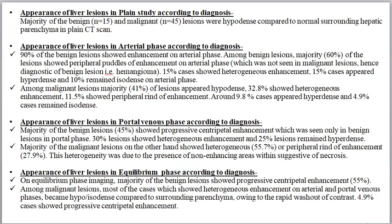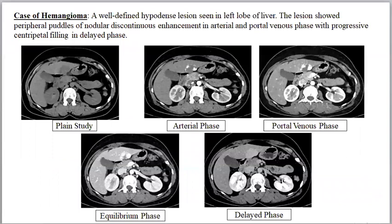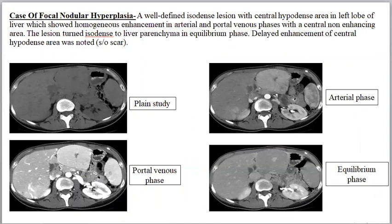On equilibrium phase imaging, the majority of benign lesions showed progressive centripetal enhancement. Among malignant lesions, most cases that showed heterogeneous enhancement on arterial and portal venous phases became hypodense or isodense due to rapid washout of contrast. 4.9% of cases showed progressive centripetal enhancement. A case of hemangioma showed a well-defined hypodense lesion in the left lobe of the liver with peripheral puddles of nodular discontinuous enhancement in arterial and portal venous phases, with progressive centripetal filling in the delayed phase. A case of focal nodular hyperplasia showed a well-defined isodense lesion with a central hypodense area, demonstrating homogeneous enhancement in arterial and portal venous phases with delayed enhancement of the central scar.